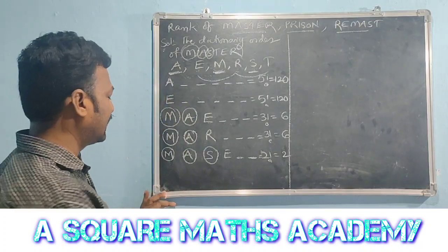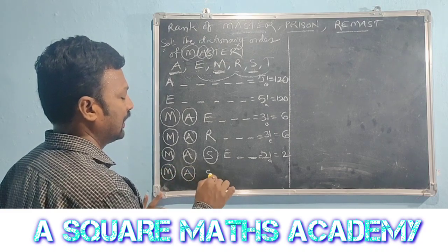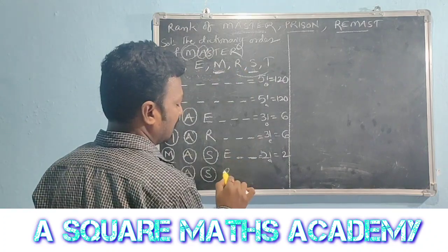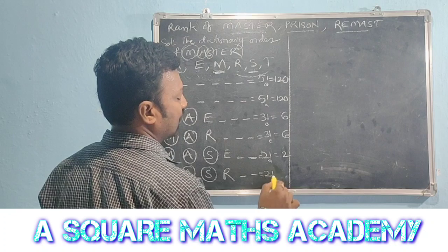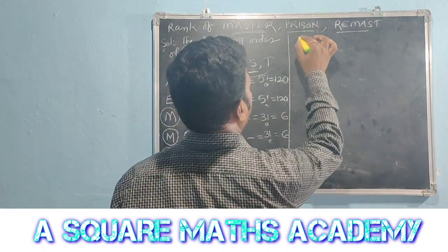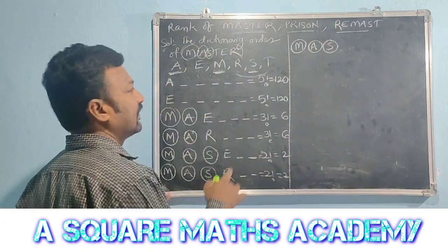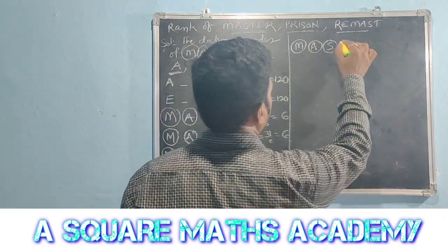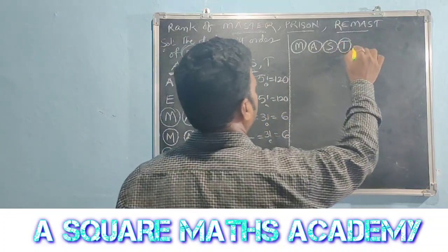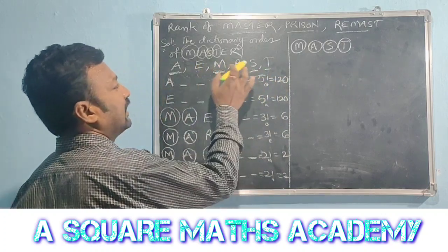Next prefix M-A-S: fix M, A, S. Then remaining letters include R and T. The letter R comes before S, giving 2 arrangements. Then M-A-S-T prefix: remaining letter is only R, giving 1 arrangement.